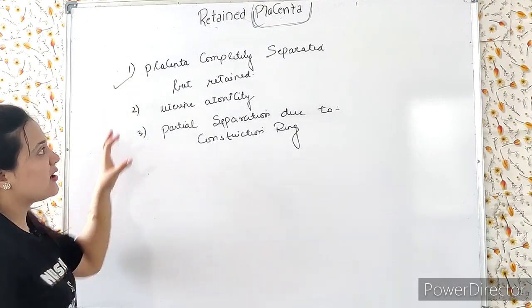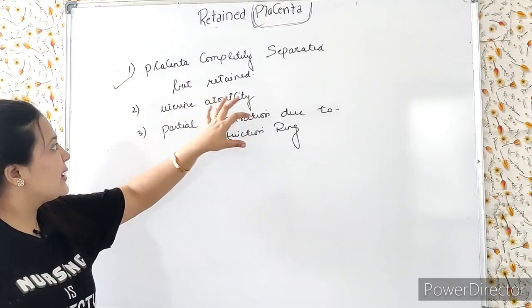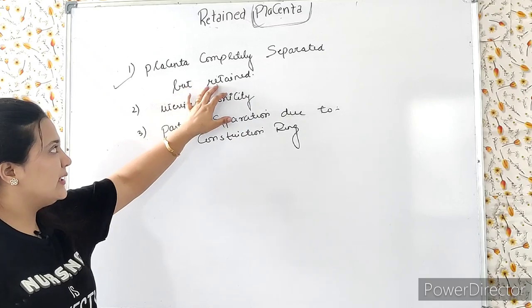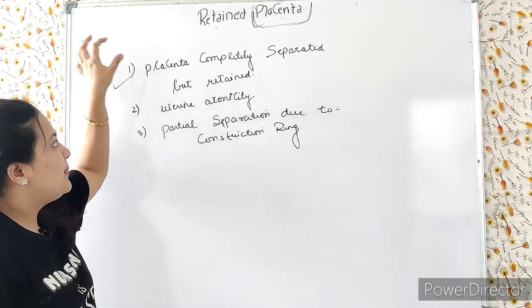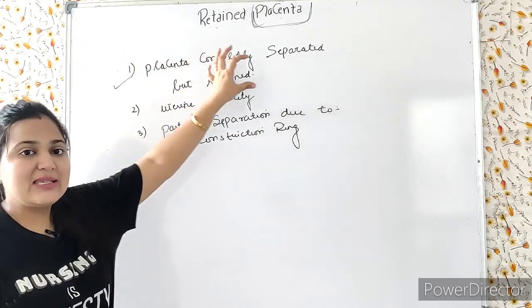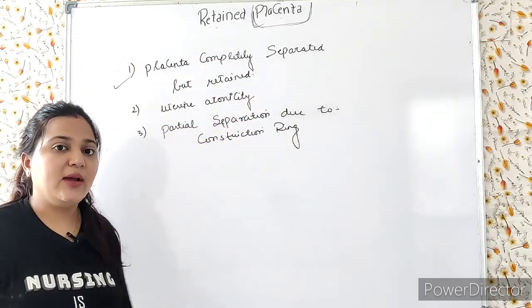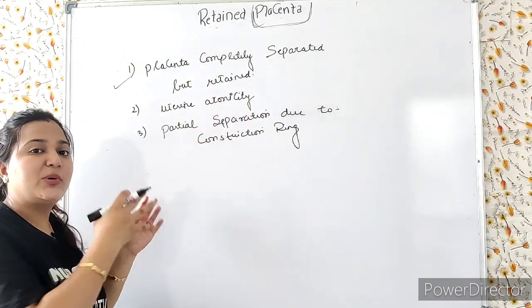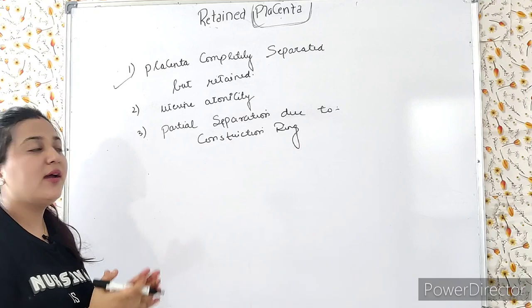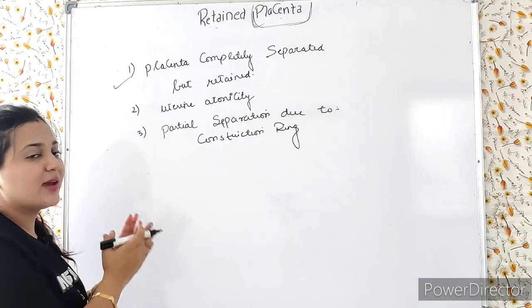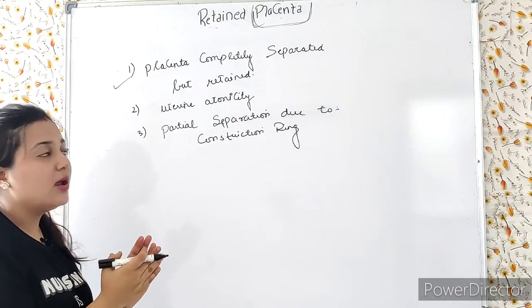The first type is: placenta completely separated but retained. The placenta has completely separated but expulsion has not occurred — it is retained in the uterine cavity.